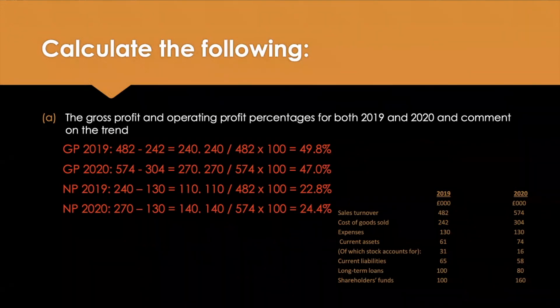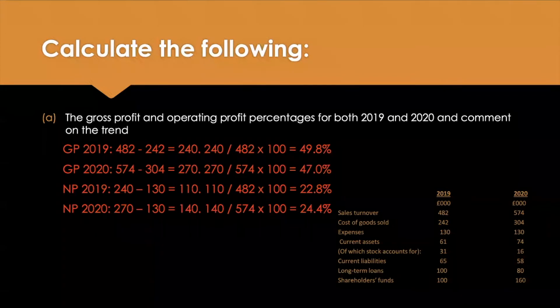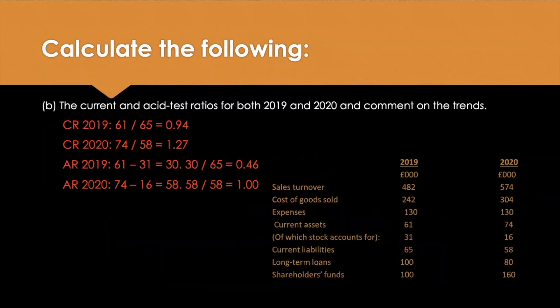Net profit takes away the expenses - these are the fixed costs and overheads, and they don't actually change from one year to the next. So whilst we see the gross profit dipping in year two, the net profit actually increases. In 2019, you take 240 gross profit, subtract the 130 expenses, which leaves 110. Divide that by the turnover and times by 100 - giving a net operating profit of 22.8% in 2019, and a higher 24.4% in the second year. We can't just look at data in isolation; we have to compare what's really happening behind the scenes.